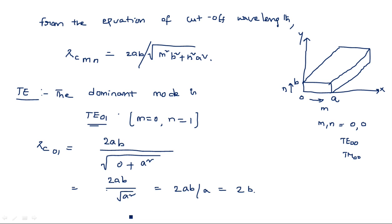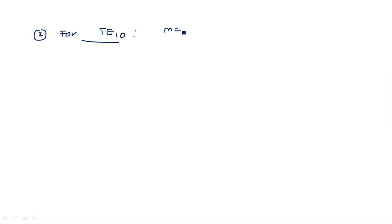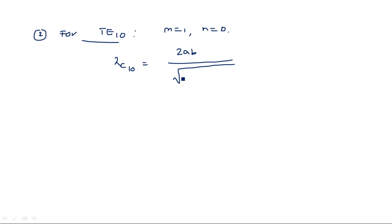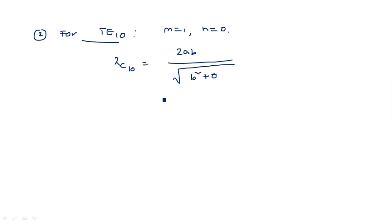Similarly, let us check TE10, where M=1 and N=0. Lambda c (10) = 2AB / sqrt(M²B² + N²A²) = 2AB / sqrt(1·B² + 0) = 2AB / B = 2A. So lambda c (10) = 2A.